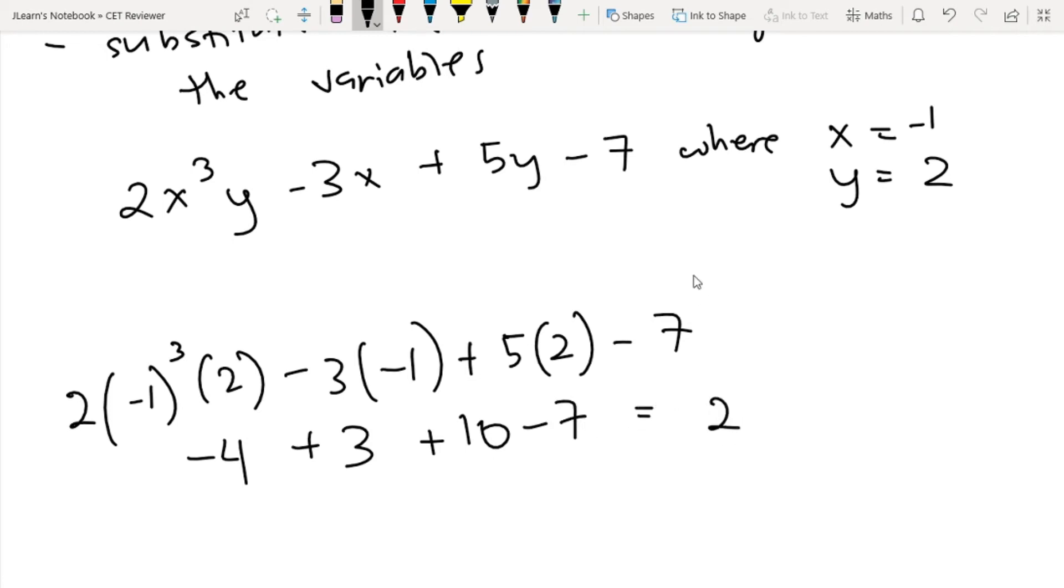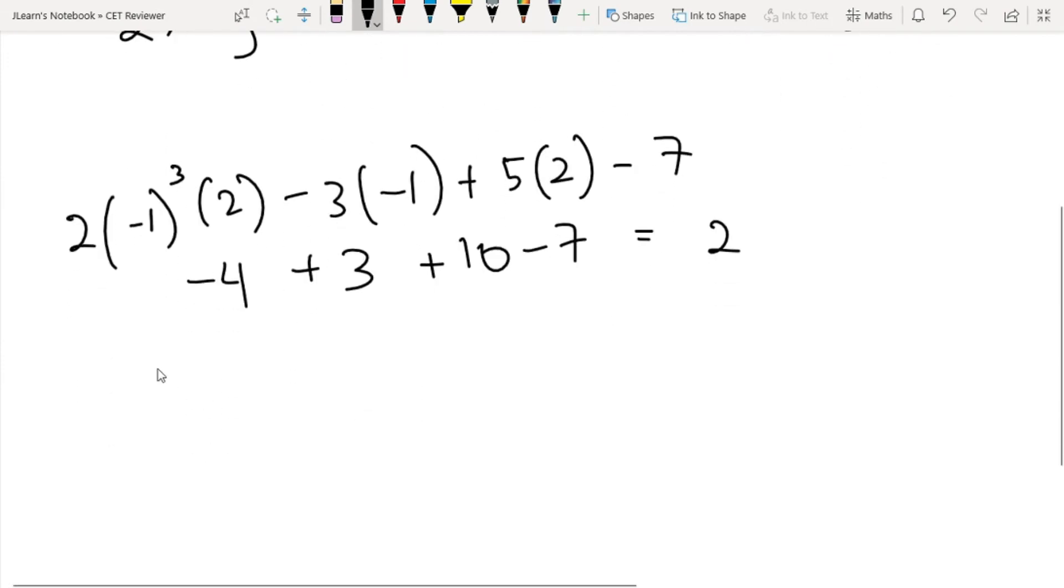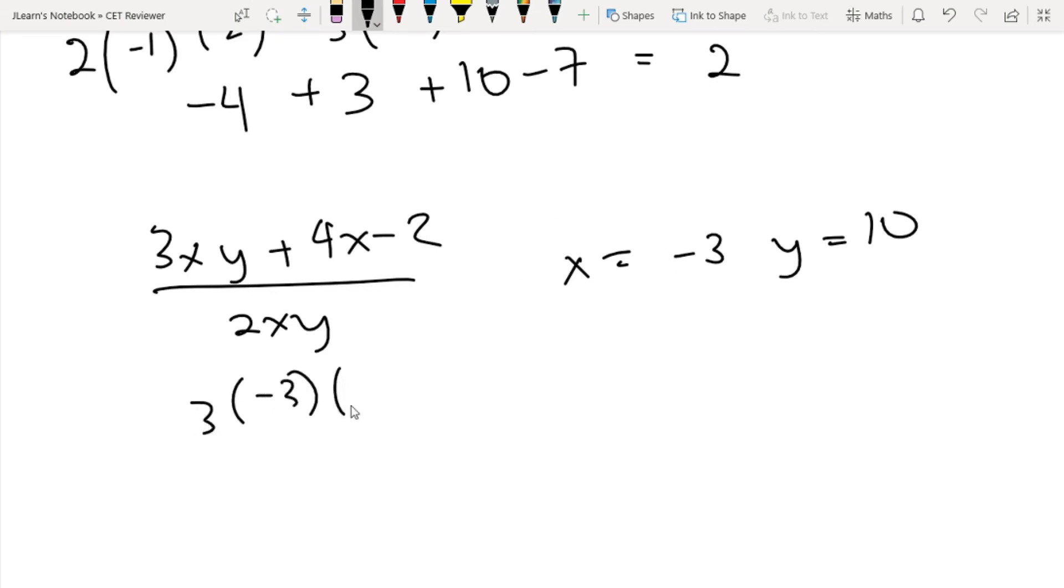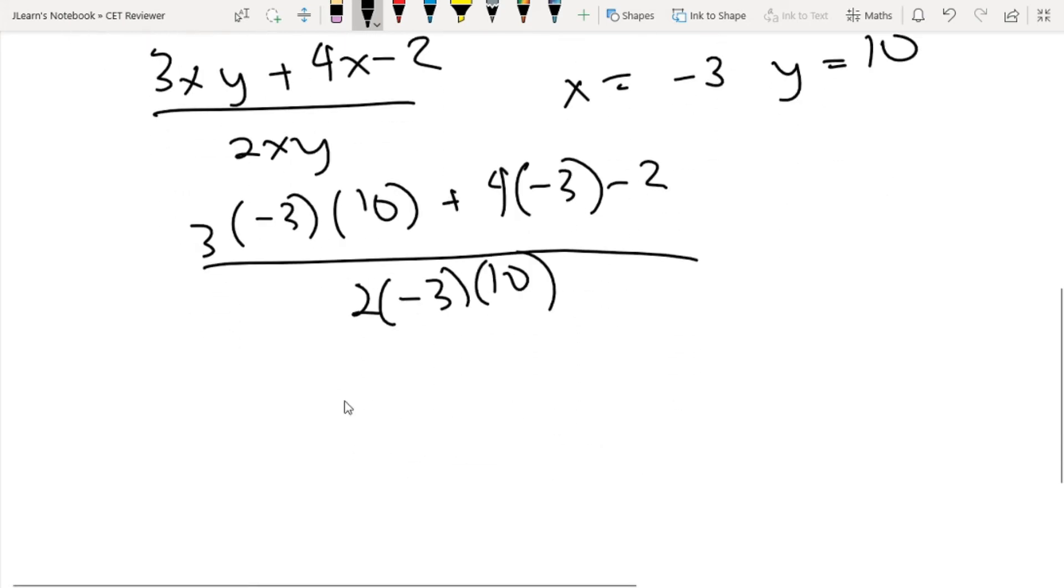Let's step it up a bit. Let's say you have (3xy + 4x - 2) / (2xy) where x is equal to -3 and y is equal to 10. Again we just substitute the values: 3 times -3 times 10 plus 4 times -3 minus 2, all over 2 times -3 times 10.